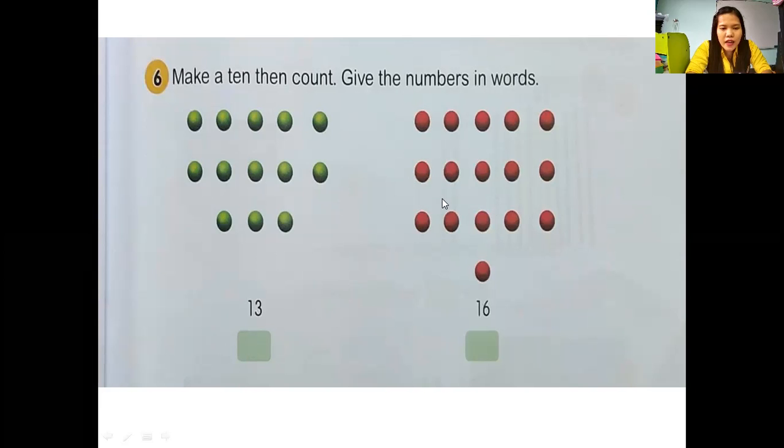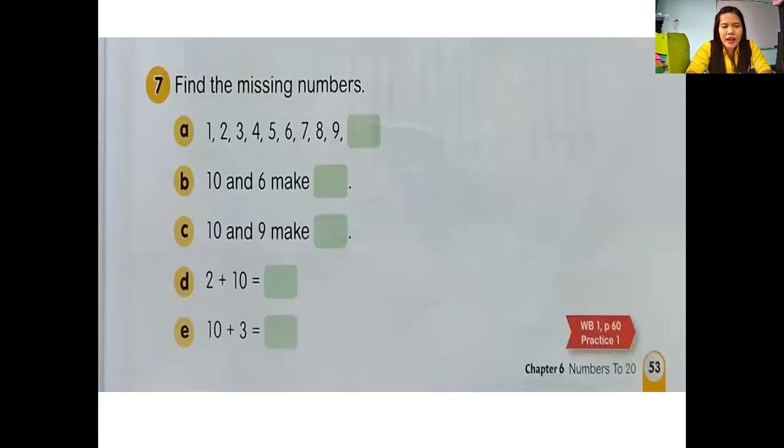Next, number 6. Make a 10, then count. Buat dulu 10, kemudian hitung. Give the numbers in words. Jadi, kita mau disuruh untuk menuliskan huruf. We can count: 1, 2, 3, 4, 5, 6, 7, 8, 9, 10. Jadi, buat dulu 10. And then, di bawahnya: 11, 12, 13. How to write 13 with a letter? This one, the second: 1, 2, 3, 4, 5, 6, 7, 8, 9, 10. Make a 10 first. And then count again: 11, 12, 13, 14, 15, 16. How to write 16 dengan huruf? Easy right, kid?